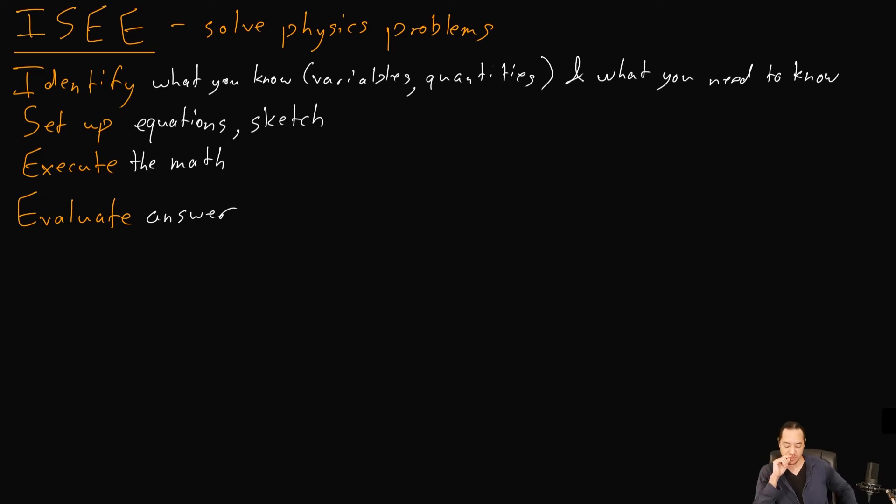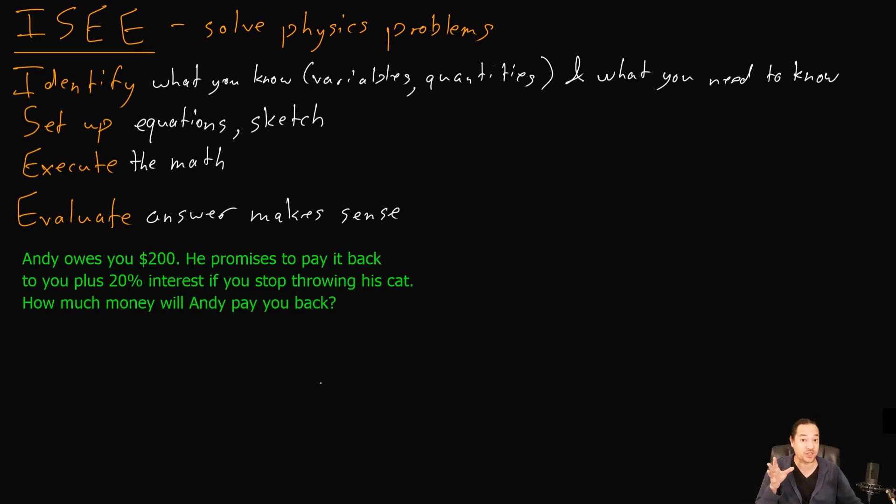You want to catch yourself if maybe you made a mistake somewhere and your answer actually is completely wrong. Here's where you can just look at it and say, does that really make sense, yes or no? All right, let's see if we can come up with a quick example. Here's the quick example. Andy owes you $200. That's a lot of lunch money. He promises to pay it back to you plus 20% interest as long as you stop throwing his cat. How much money will Andy pay you back?